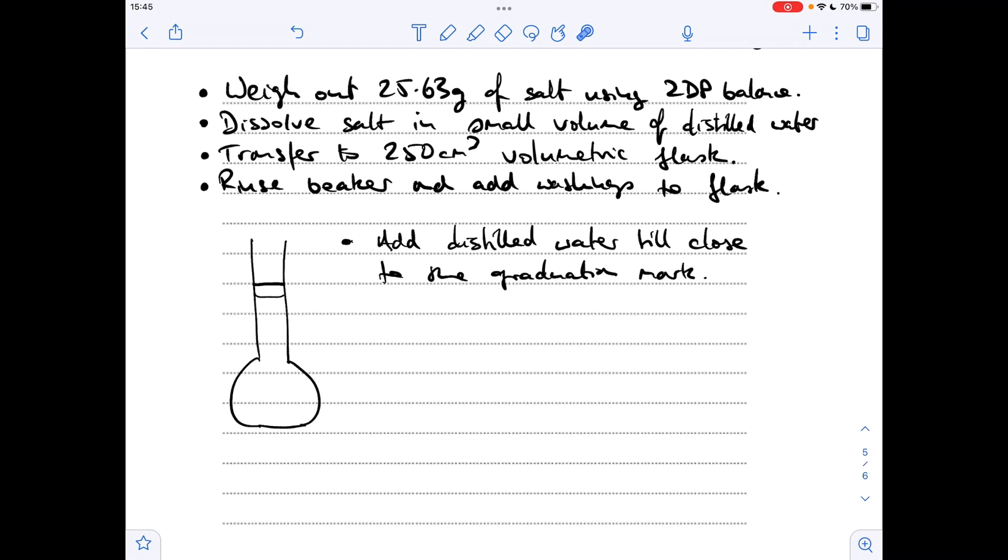Next thing we do is using a dropper, we're going to add more distilled water so that the base of this meniscus is on that graduation mark, on that line. It's going to look like that now. The final thing we need to do is put a stopper on and shake the flask to make sure it's all mixed together.